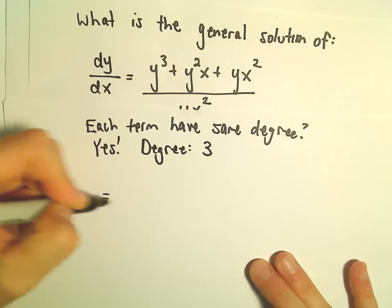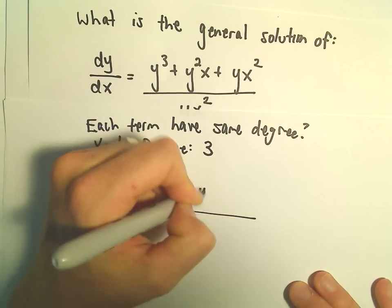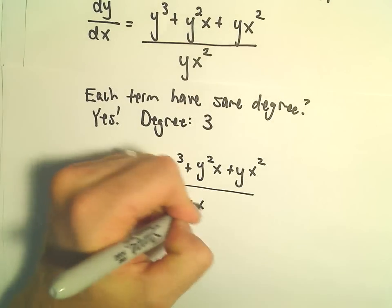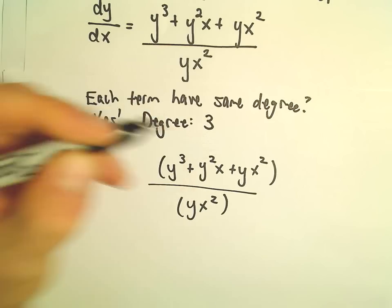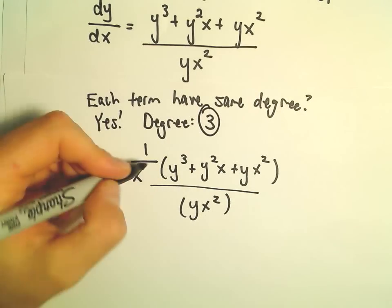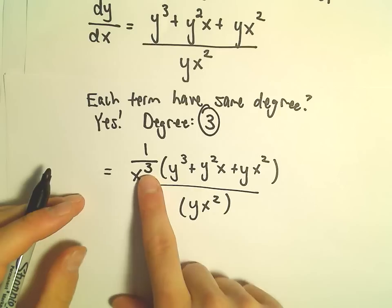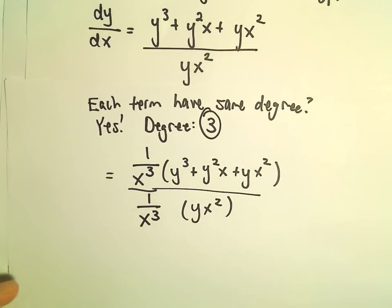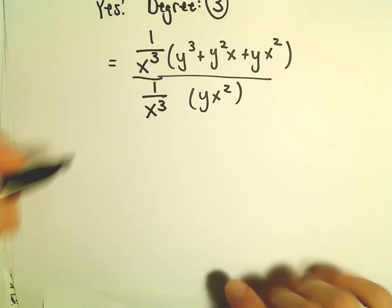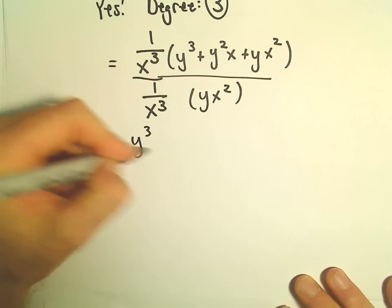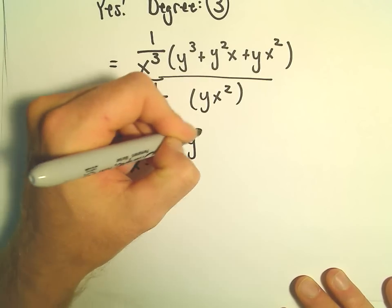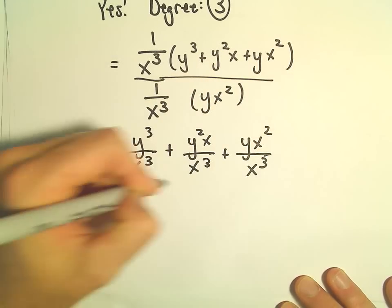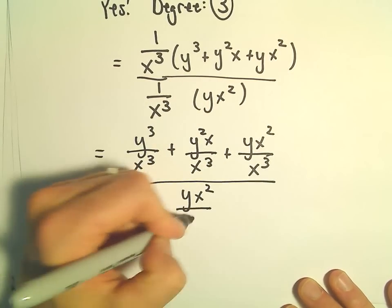What we do is take our differential equation and multiply by one over x to the degree. In this case the degree is three, so that's the exponent we use. If you multiply the numerator by one over x to the third, we have to do the same to the denominator. Simplifying: this will be y cubed over x cubed, then y squared times x over x cubed, then y times x squared over x cubed, and then y times x squared over x cubed again.